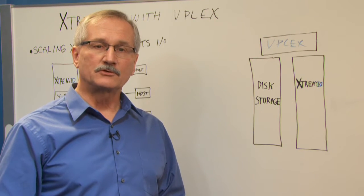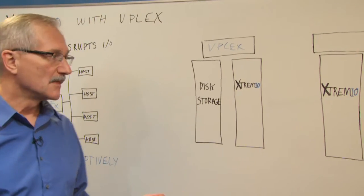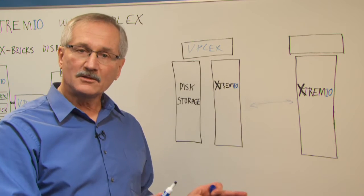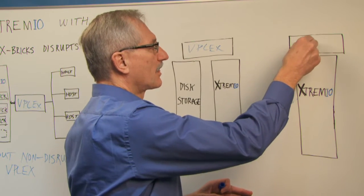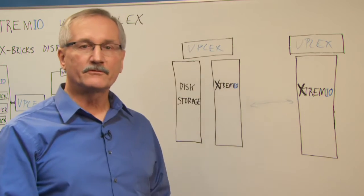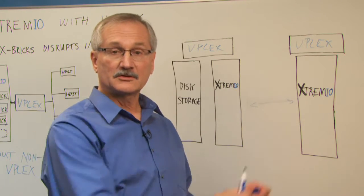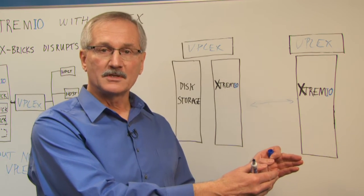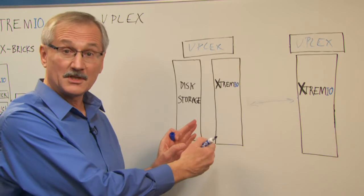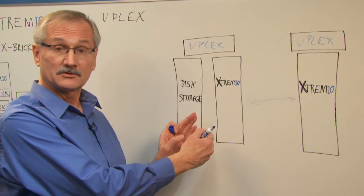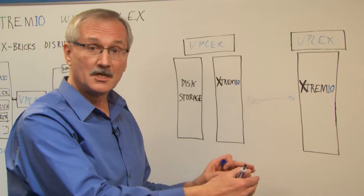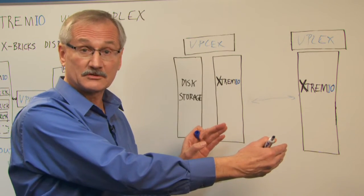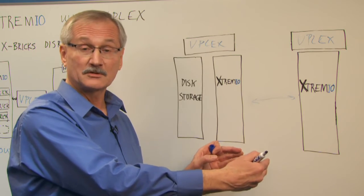Now let's say you have two sites for availability. If I have a metro distance second site, I can put VPLEX in that site as well, and now give the same benefits across distance. So with the second site, I have my high-performance storage and when my applications are done running in that, I can move it non-disruptively back to disk storage at the other site, which is cheaper, lower-performance storage, and again make room for other workloads. So we have completely non-disruptive high availability storage, and you have continuous availability across the sites, so even if you lose one site, all your applications can keep running.